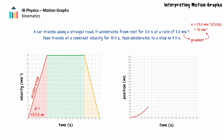In the next 10.0 seconds, the car has uniform velocity. The car's displacement in this segment is the area of the rectangle, which is positive 150 meters. The position-time graph will be a straight line with a positive gradient of 15 meters per second. The second segment of the car's journey on the position-time graph extends from 37.5 meters at 5 seconds to 187.5 meters at 15 seconds.